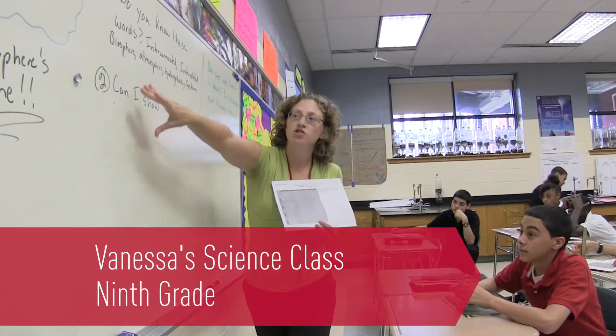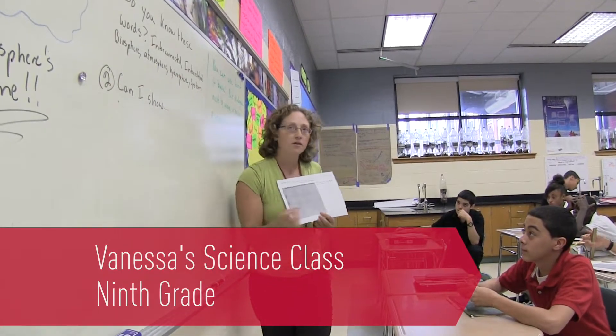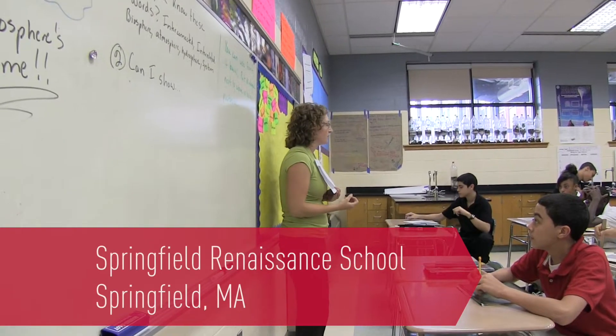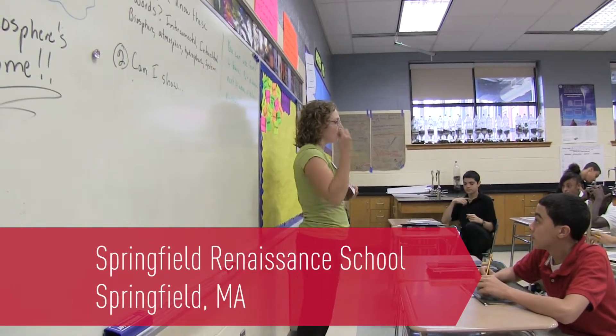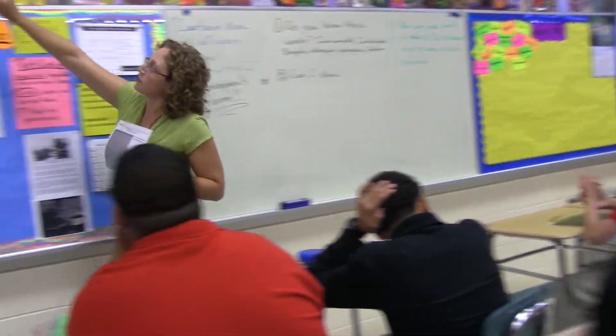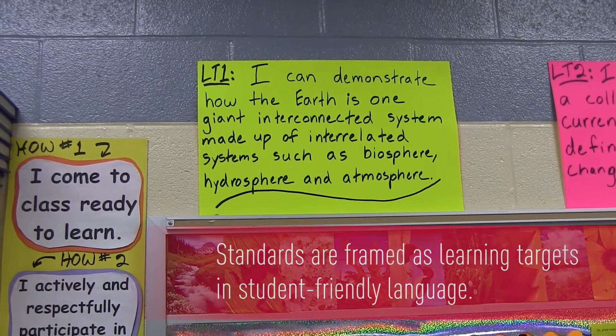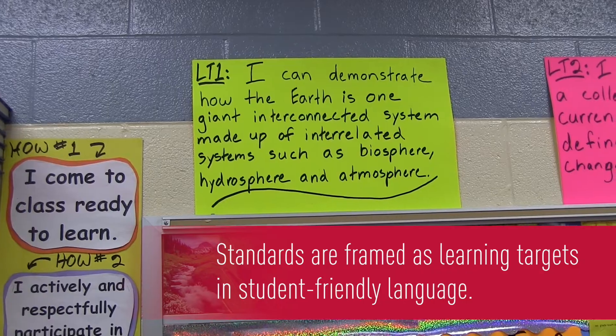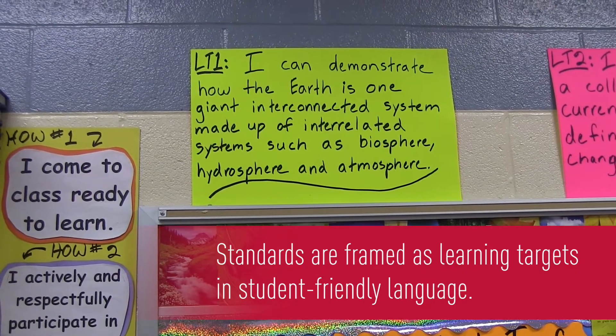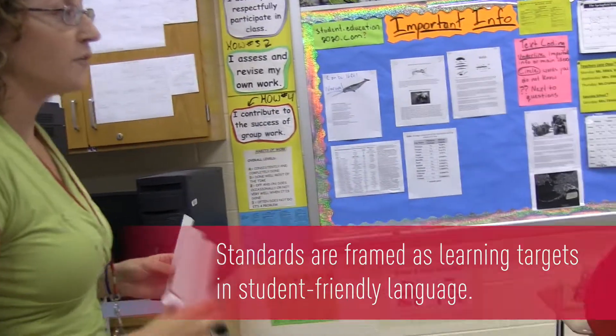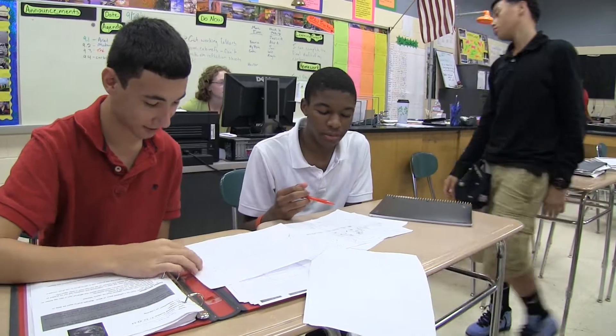What do we need to show? Think about the cartoon we're making. The learning target that we're working on in ninth grade environmental science is about how the earth is one giant system. Think about the goal of our cartoon. And our major assessment for it is a cartoon that shows these interactions.